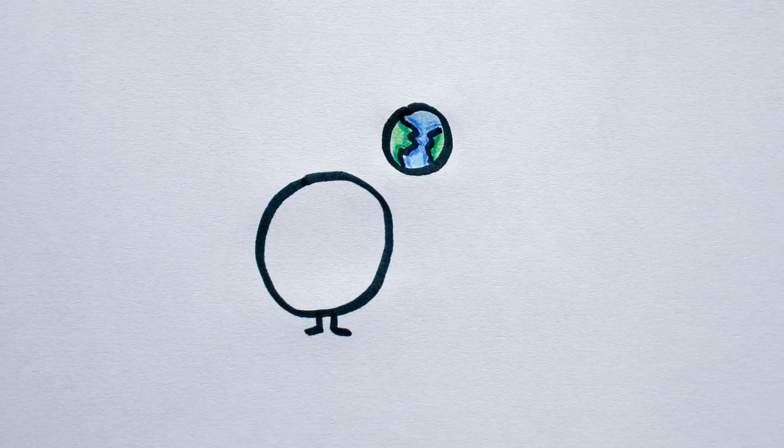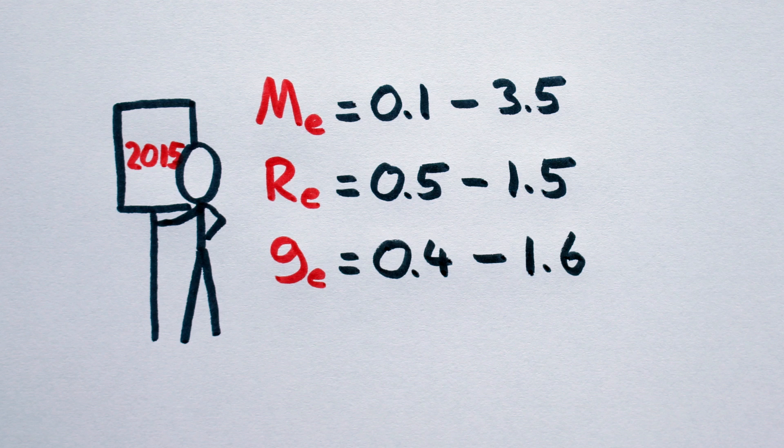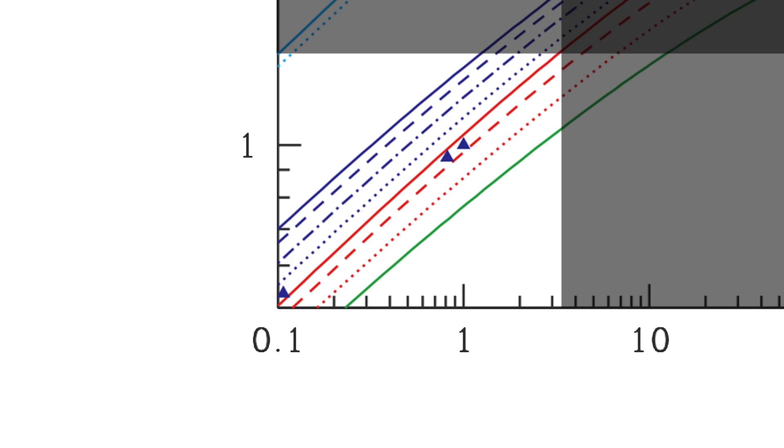But hey, what if you don't want a rocky terrestrial planet? Maybe you want an ocean planet. All water, no land, let's do this. Just like with our standard rocky planet, we have to stick to our ranges for gravity, mass and radius. But in the case of a water world, we want to be in the blue band here.